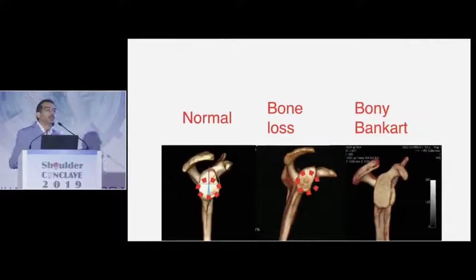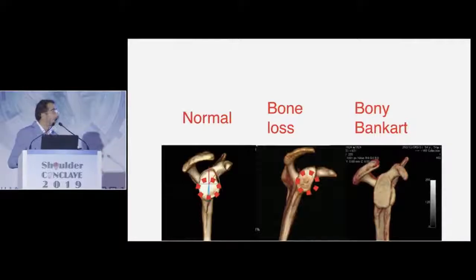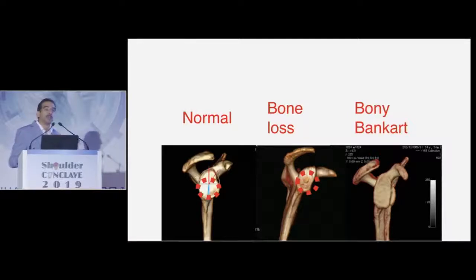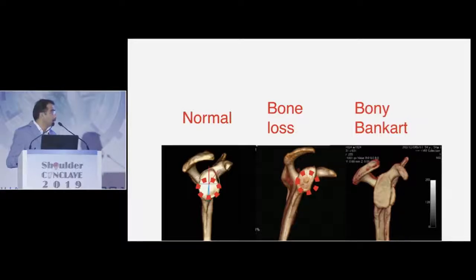These are the comparative CT scans where you can see this is a normal glenoid. All three of them are dislocators. I would do an arthroscopic Bankart for this patient. This one has glenoid bone loss and most of us will agree we will do between an open and an arthroscopic Latarjet for this patient. But this is the one that often gets missed.